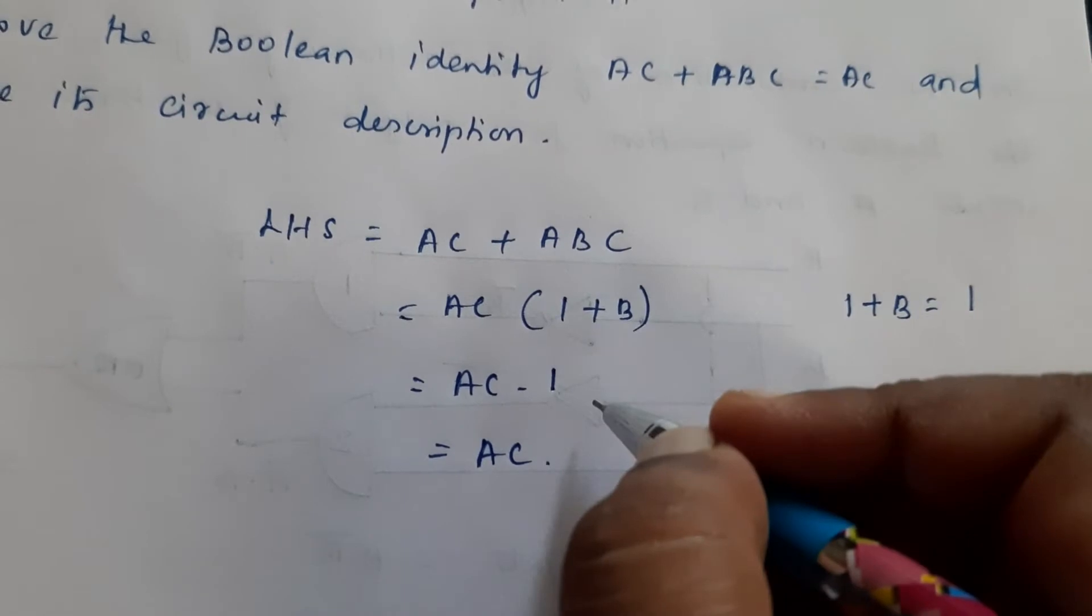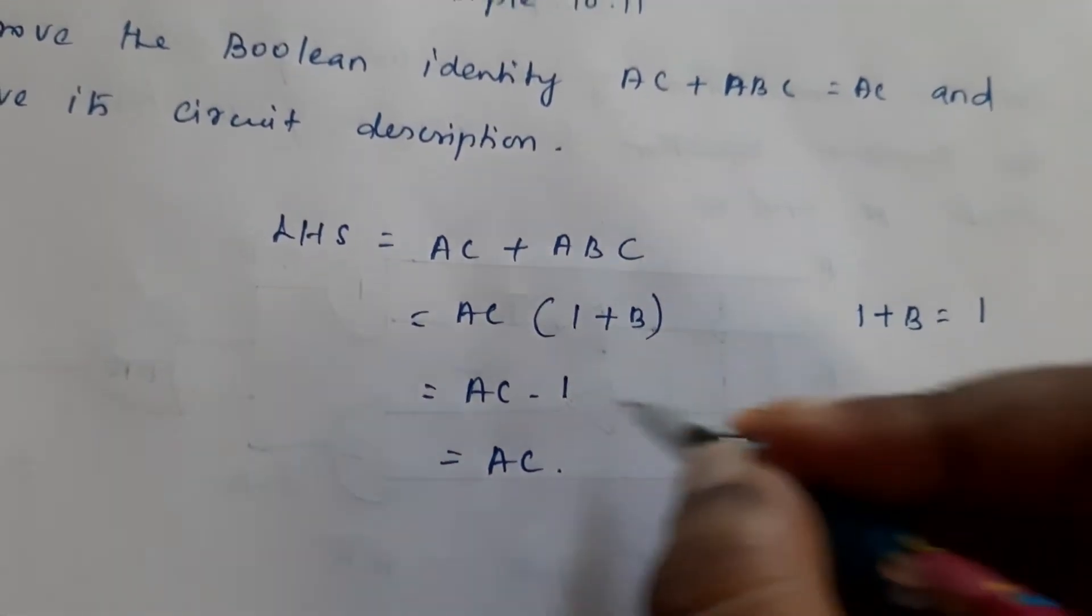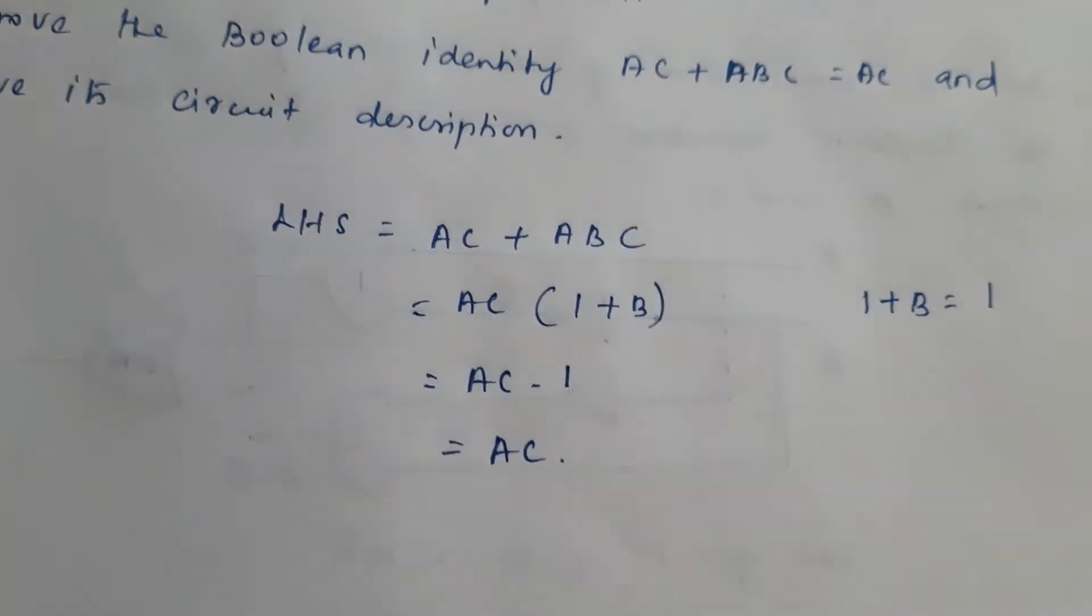So we know anything times 1 is what? That same number. So we can write AC times 1 is equal to what? AC.